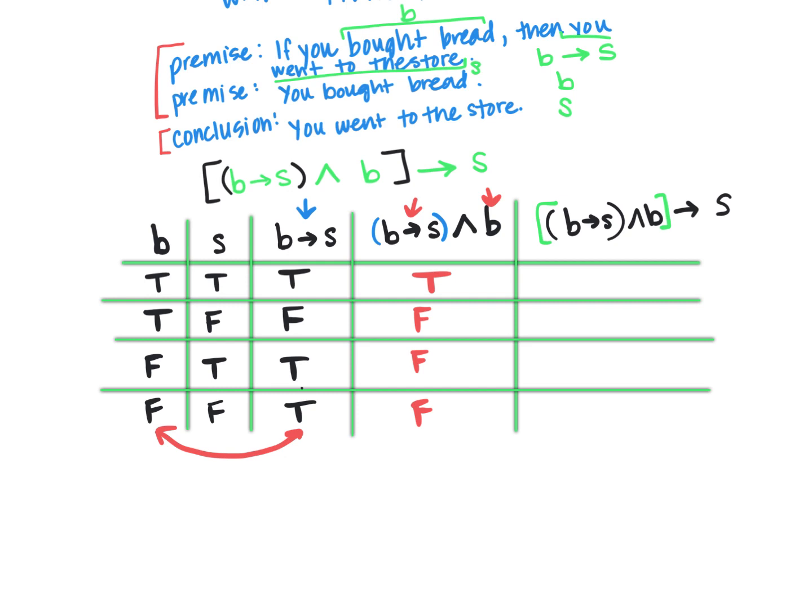All right, now for our last one, we are looking at this last conjunction for our hypothesis of that conditional. And so as long as true gets us true, so let's see that first row. True gets me true, that is going to be true.